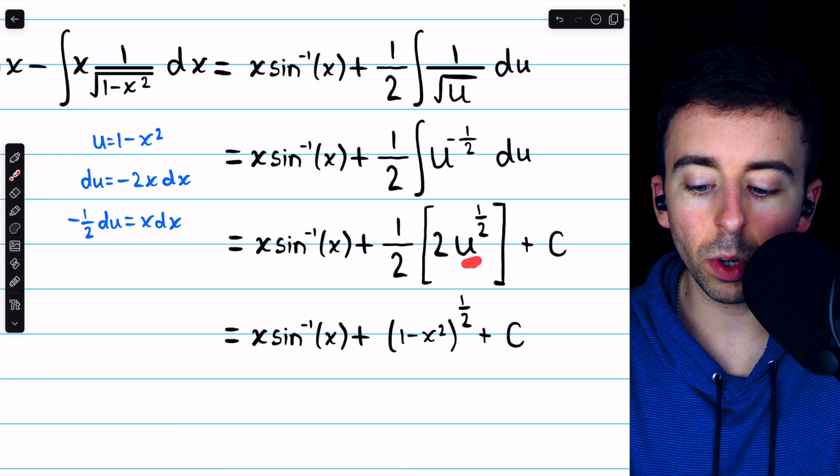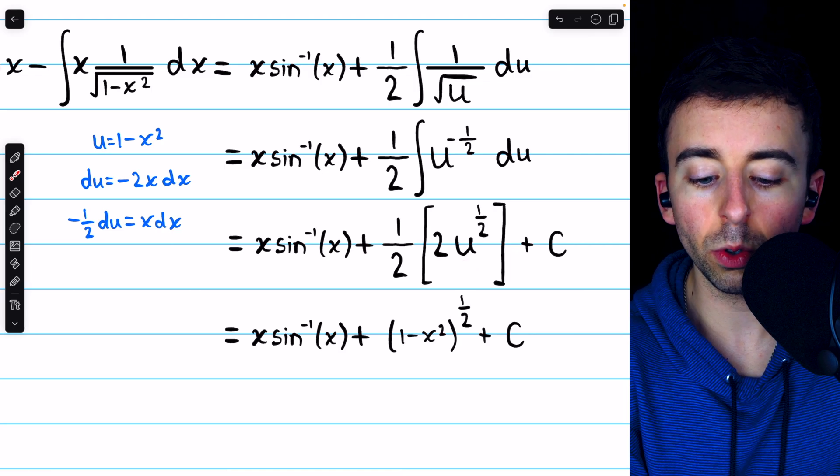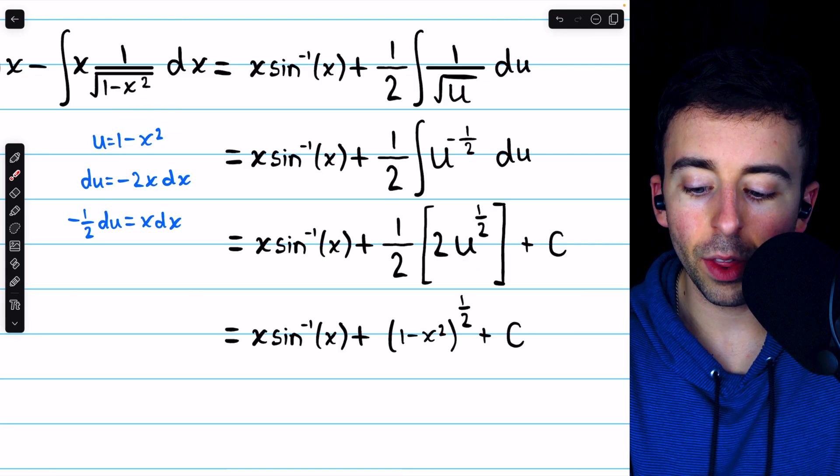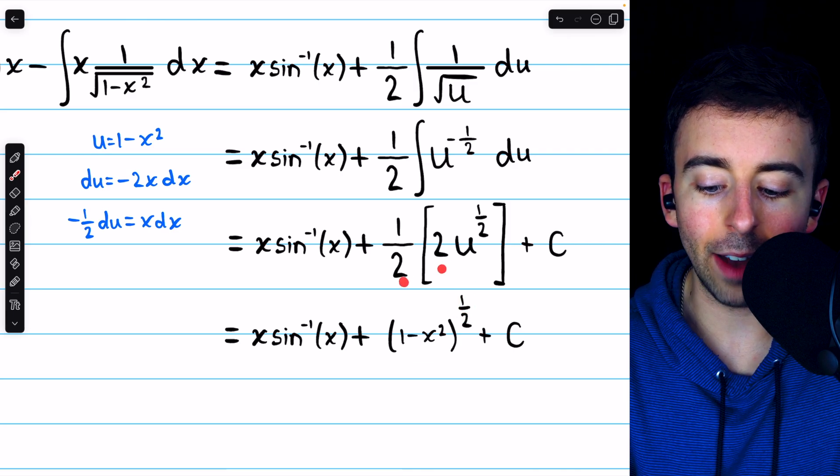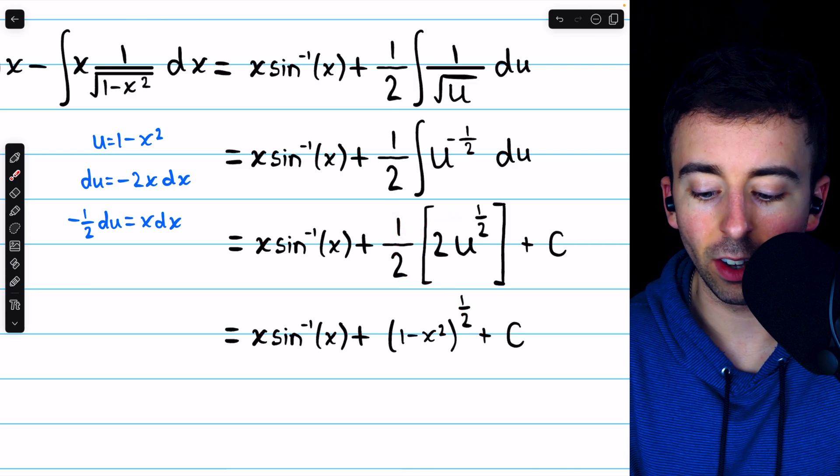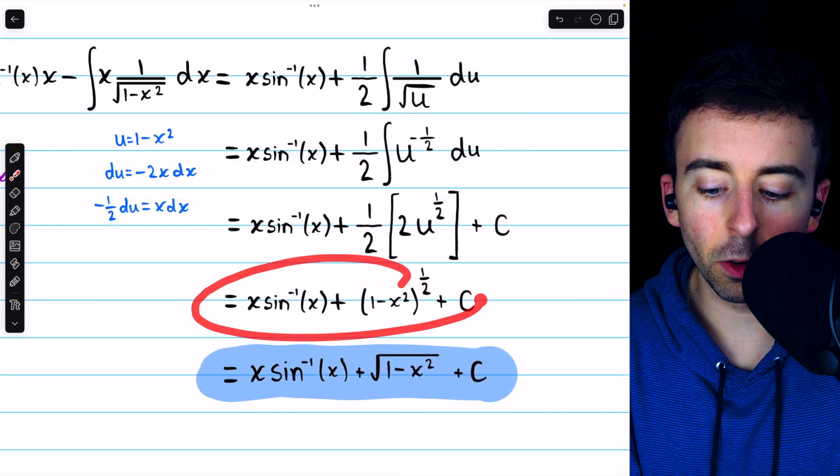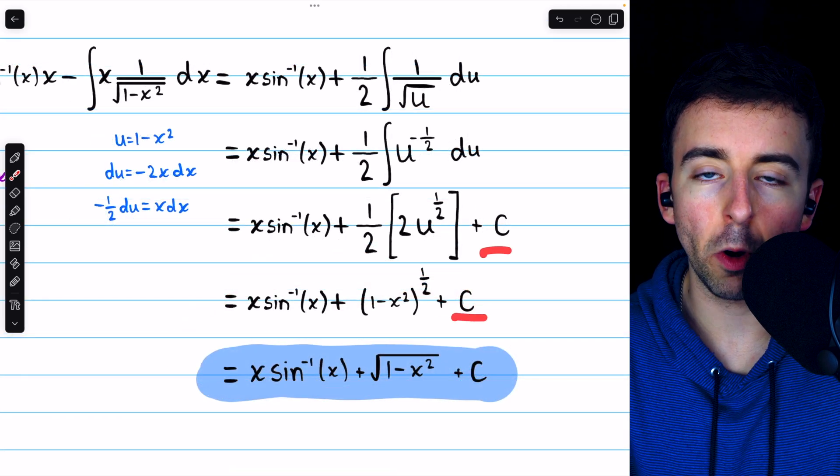Then we replace u with what we set it equal to, which was 1 minus x squared. Thus, we have 1 minus x squared to the one half, the 2 and the one half there cancel out. And so we're right here. That's the integral, of course we also have the arbitrary constant.